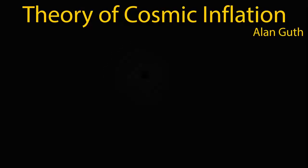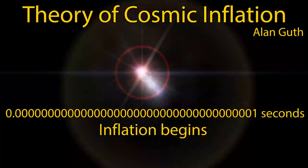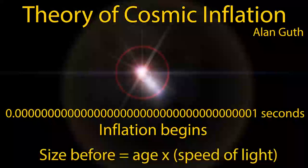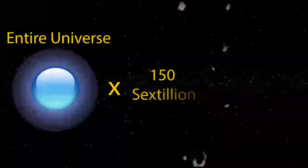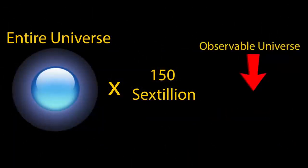if it is assumed that cosmic inflation began at 10 to the negative 37th of a second after the Big Bang, and with the assumption that the size of the universe before inflation began was equal to its age times the speed of light, then this would seem to suggest that at the present day the entire universe is 156 billion times larger than the observable universe.